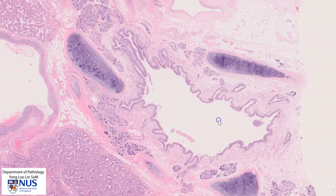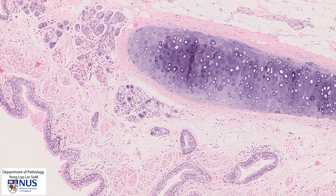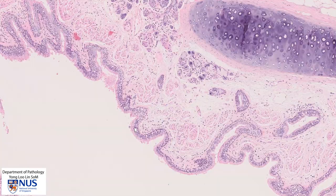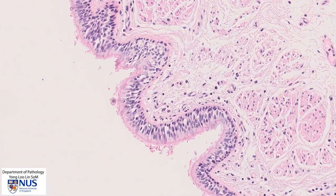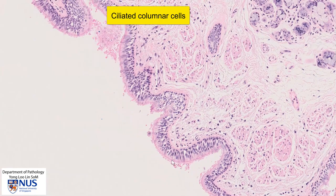Here is the bronchus, and we can see the bronchial cartilage, in which the chondrocytes sit inside lacunae within this blue-gray myxoid stroma. We have the peribronchial glands here, which include mucus glands, and some of these granular bluer ones are serous glands — so seromucinous glands. We also have the bronchial epithelium and the lumen, which is lined by pseudostratified columnar cells. If you look carefully, you can see the cilia — these are ciliated columnar cells.